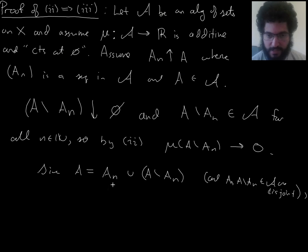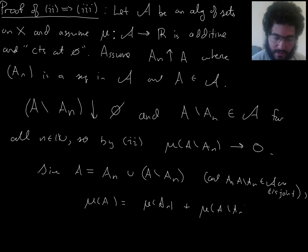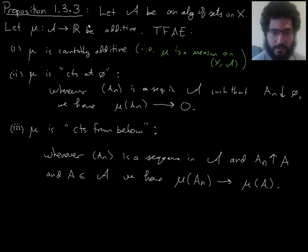So, since A breaks down as a union of these two things, and these are disjoint, and they're in fancy A, we have μ of A equals μ of A_n plus μ of this thing. That's by the ordinary additivity of μ, which is a global assumption. Mu is additive. That is a global assumption on the entire proposition. We're starting with μ additive.